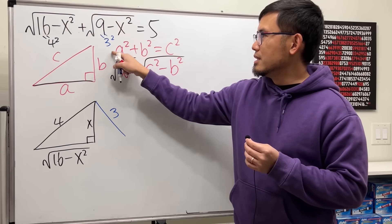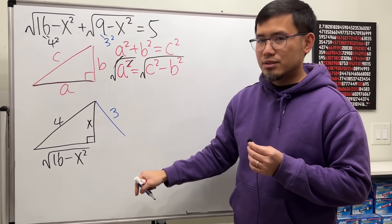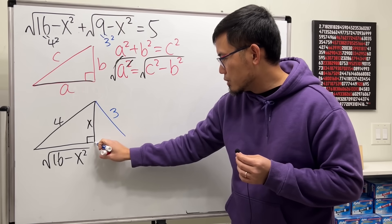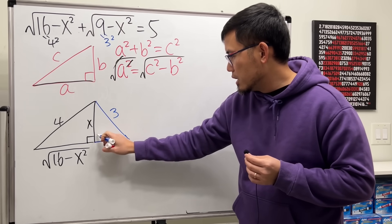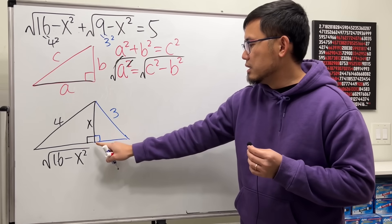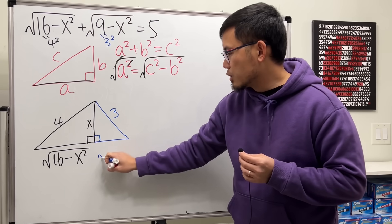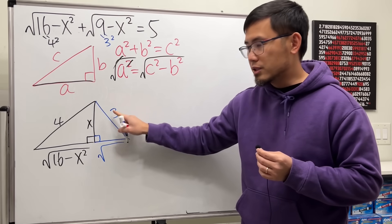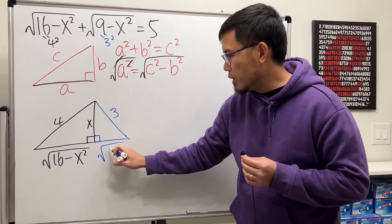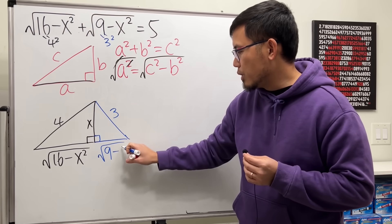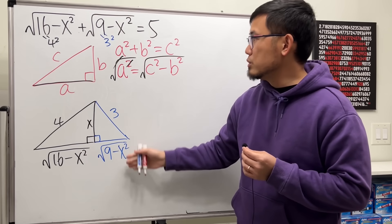3 squared, hypotenuse. Minus x squared, so it's x right here. And then finish our right triangle here. This is also a right angle. This side is precisely square root of the hypotenuse for the blue triangle, which is 3 squared right here. And then minus that side squared, which we have the x squared, which is that.